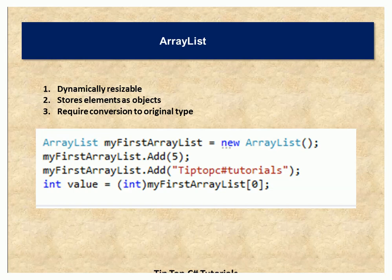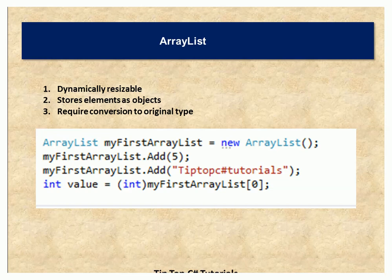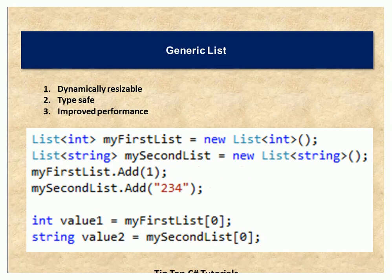Now let's take a look at the negative side. What happens if you take the string you added and try to convert it into an integer? That will lead to an InvalidCastException. So we can say ArrayList, though it is dynamic, is not type safe. How do we overcome this? By using another collection in C-Sharp which Microsoft introduced in .NET 2.0 — let's move on to that collection called generic list.